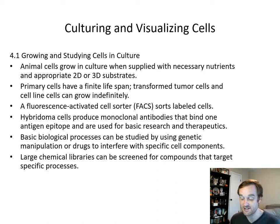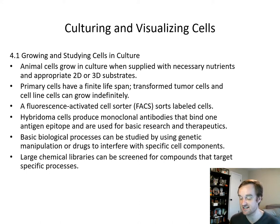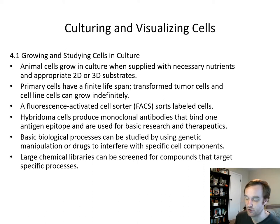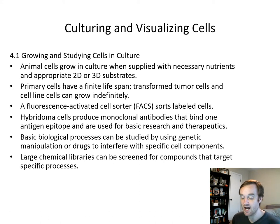There are ways to sort cells. One such way is the fluorescence-activated cell sorter, or FACS, which sorts cells that you've labeled, usually with fluorescent tags like GFP. Hybridoma cells produce monoclonal antibodies that bind one antigen epitope and are used for basic research and therapeutics.